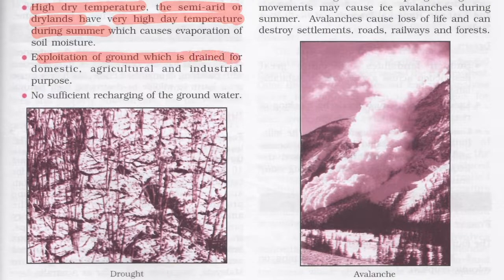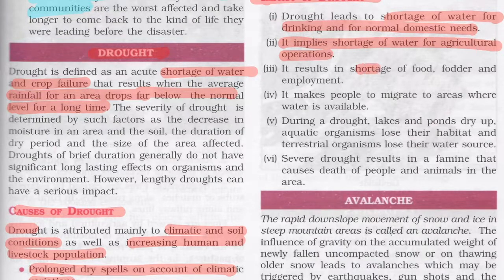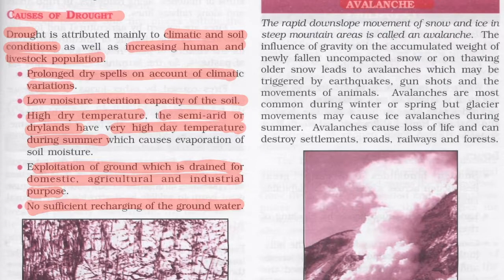Exploitation of groundwater for domestic, agricultural, and industrial purposes without sufficient recharging also causes drought. Drought leads to shortage of water for drinking and domestic needs, shortage of food, fodder and employment, and forces people to migrate. During drought, lakes and ponds dry up, aquatic animals lose their habitat, and terrestrial organisms lose their water source. Severe droughts result in famine, causing death of people and animals.